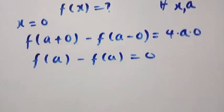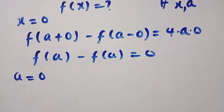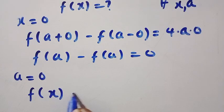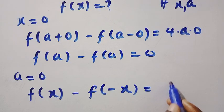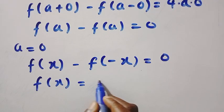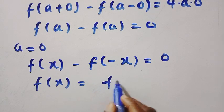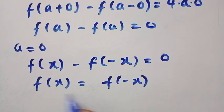What if we let a equal 0 instead? Considering a equals 0, we get f of x minus f of minus x equals 0 as well. So from here, f of x equals minus f of x, showing that this is an even function — that is, f is even.